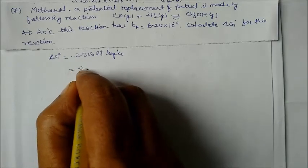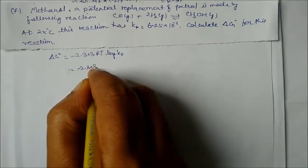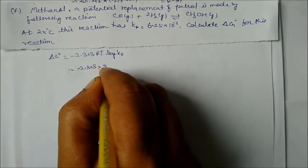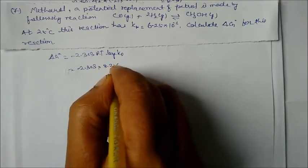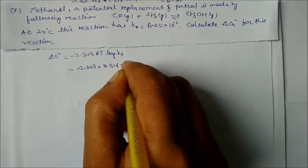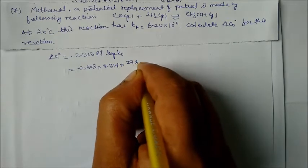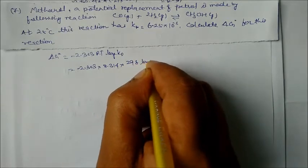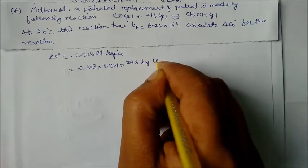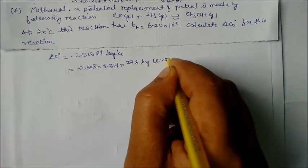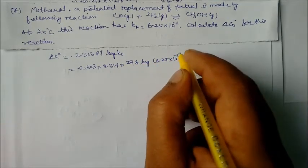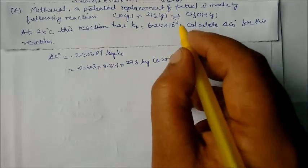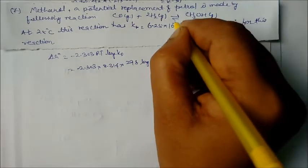Using ΔG° = −2.303 RT log Kp, putting in R = 8.314, T = 298, and log(6.25 × 10⁻³).